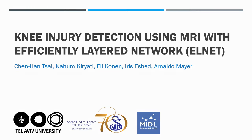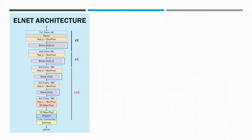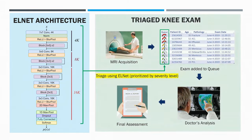In this work, knee injury detection using MRI with efficiently layered network — we introduce LNET, a CNN architecture capable of diagnosing knee injuries. By incorporating LNET into the workflow of which knee exams are carried out, common clinical procedures may be optimized by prioritizing cases with more severe injuries that LNET detects.